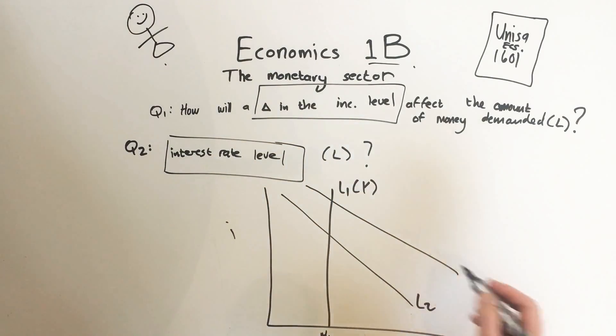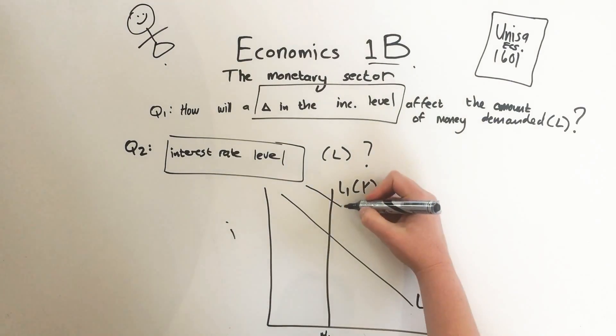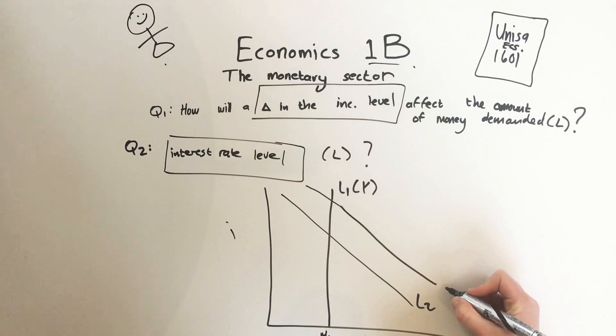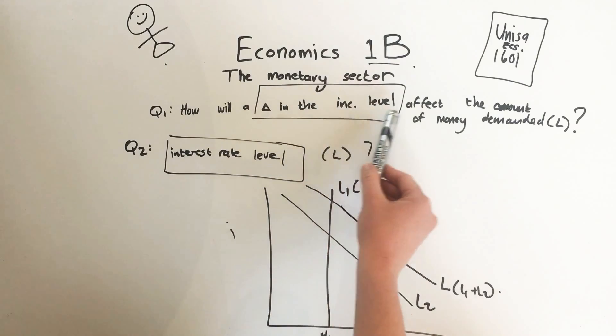Don't forget about that one - the one that runs there. That's the total demand for money, which we discussed in the previous video. I think they just call it L - that's total L. So that's L1 plus L2.